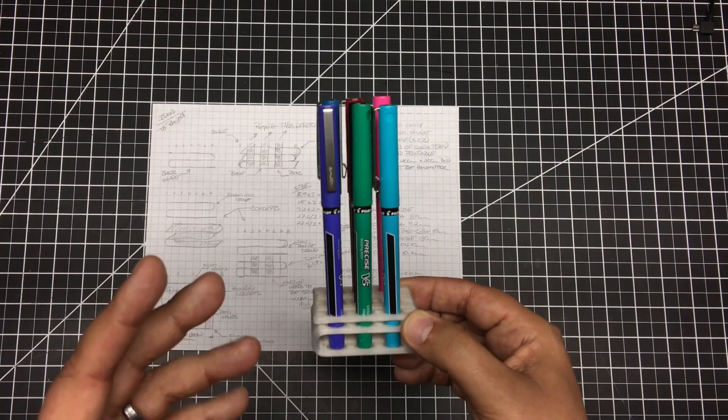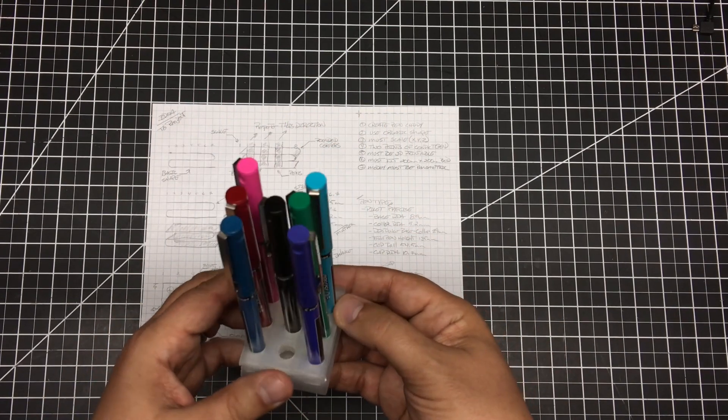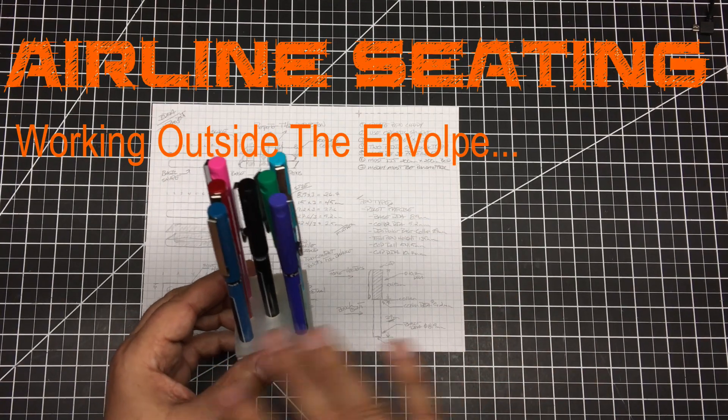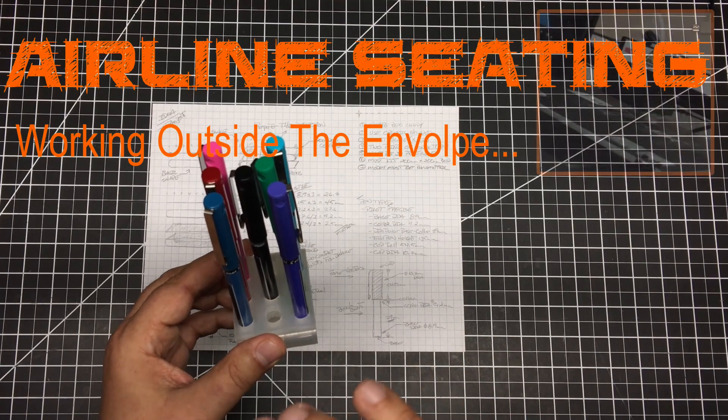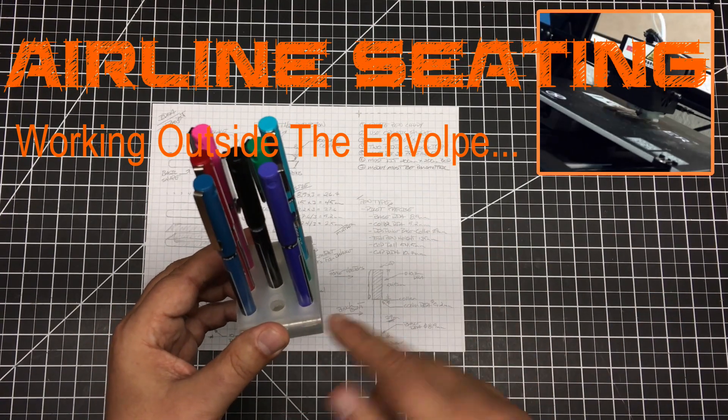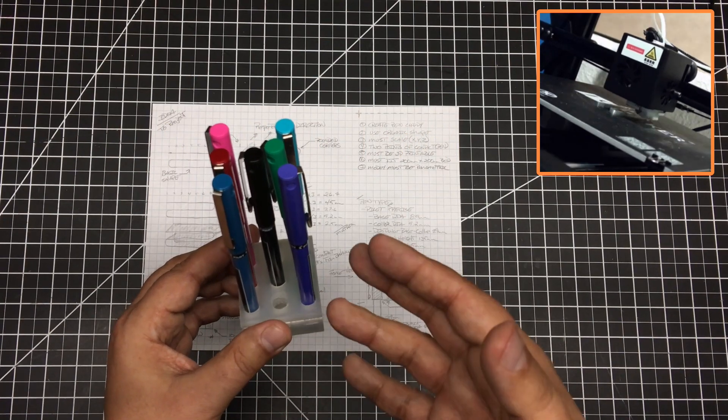Another big tip is usage of space. I wanted to keep this as small as possible. So what I did is I utilized what I call airline seating in the placement of these pens. So what is airline seating, you might ask?